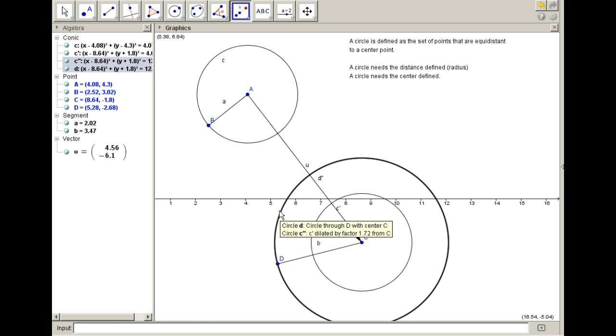Circle D, which is a circle through D with center C. And circle C double prime, which is C prime dilated by factor 1.72 from C. So we have turned them into the same exact circle.